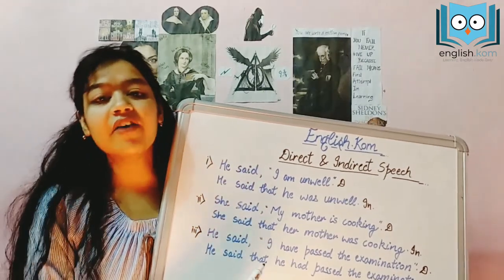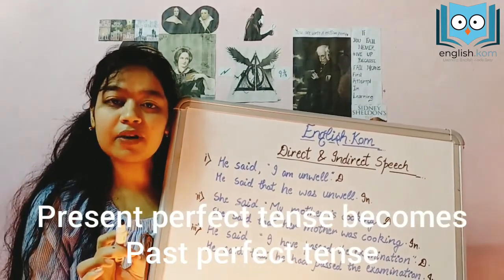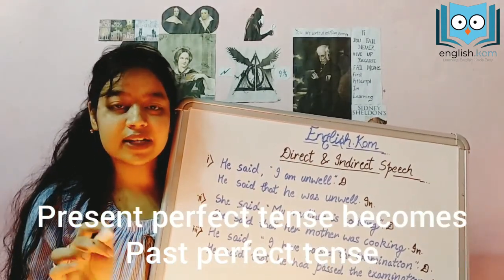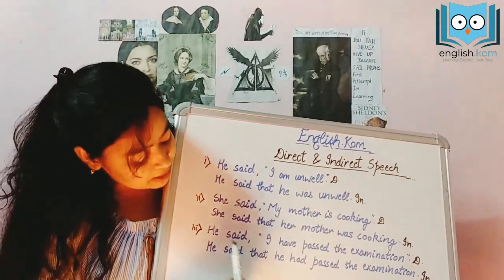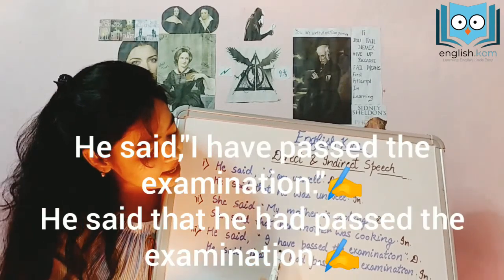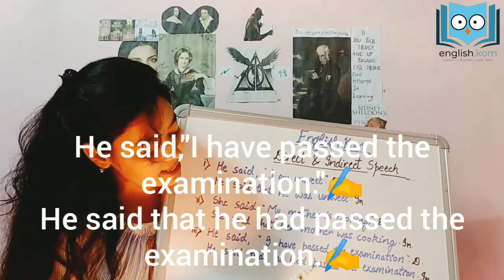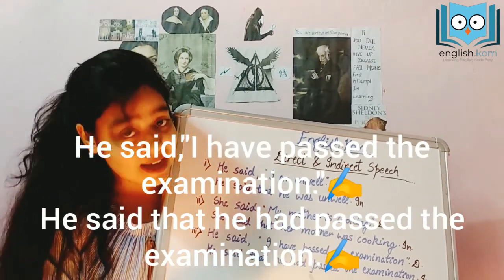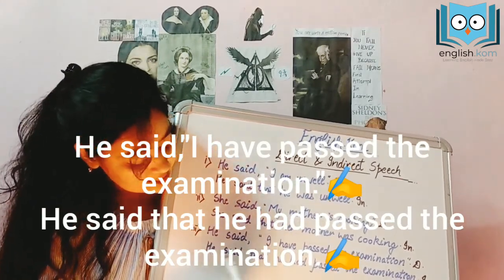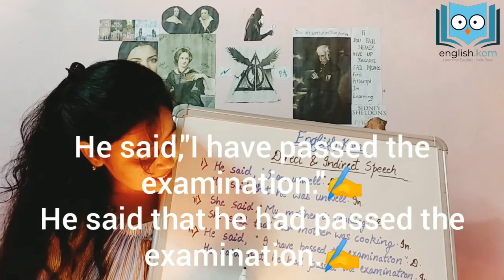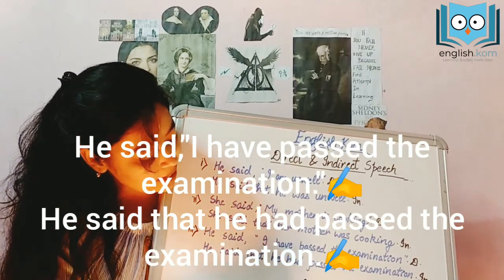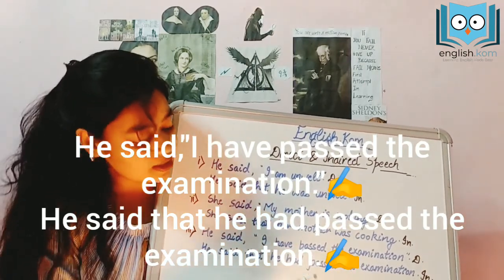Then we have the present perfect, which gets converted to past perfect. For example, he said, 'I have passed the examination,' and this gets converted to: he said that he had passed the examination.